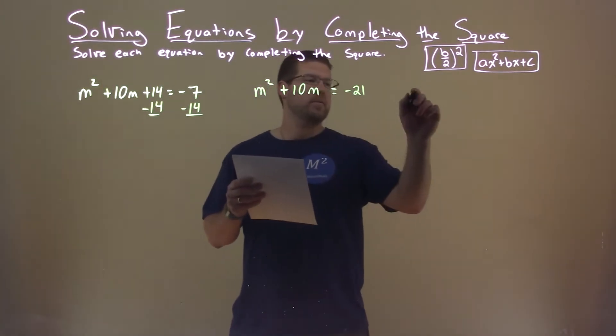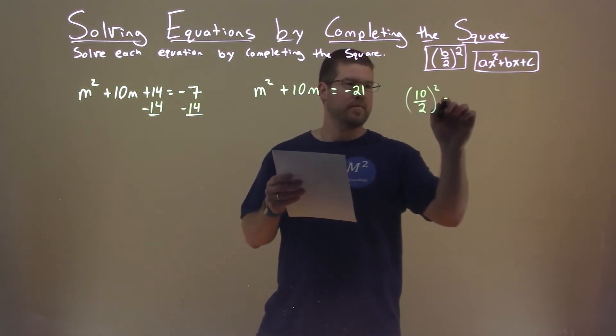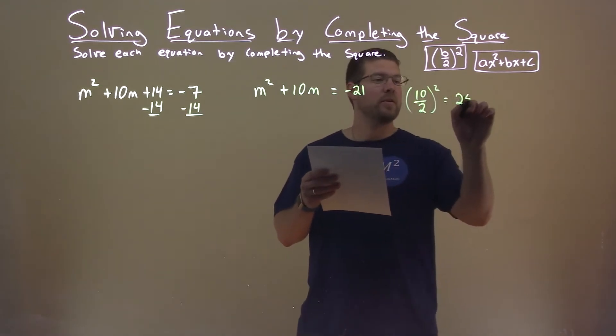I'm now going to look at my b value, which is 10. I'm going to divide that by 2 and square it. That comes out to be a positive 25.